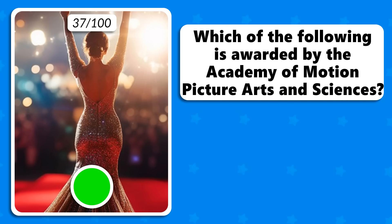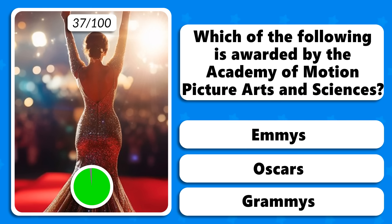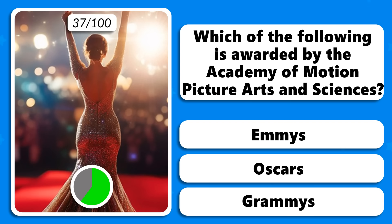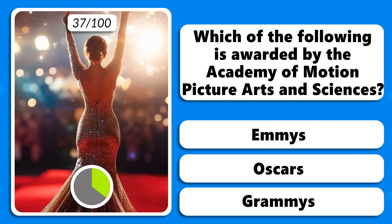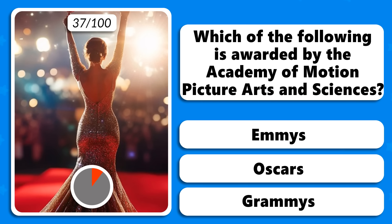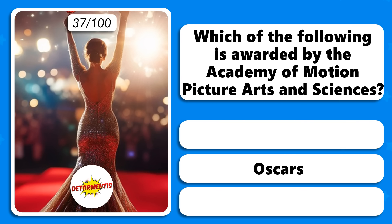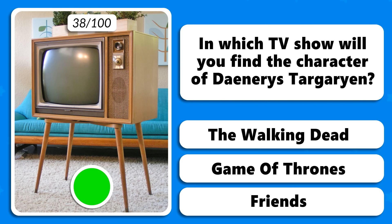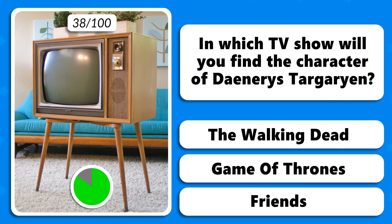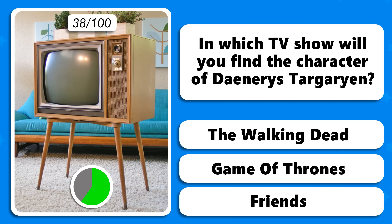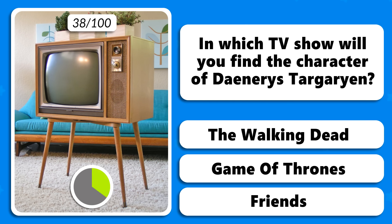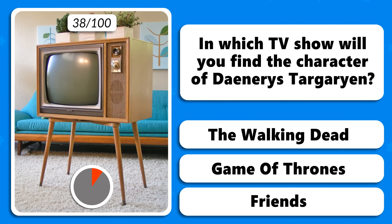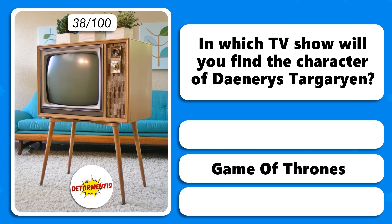Which of the following is awarded by the Academy of Motion Picture Arts and Sciences — Emmys, Oscars or Grammys? The Oscars. In which TV show will you find the character of Daenerys Targaryen — The Walking Dead, Game of Thrones or Friends? In Game of Thrones.